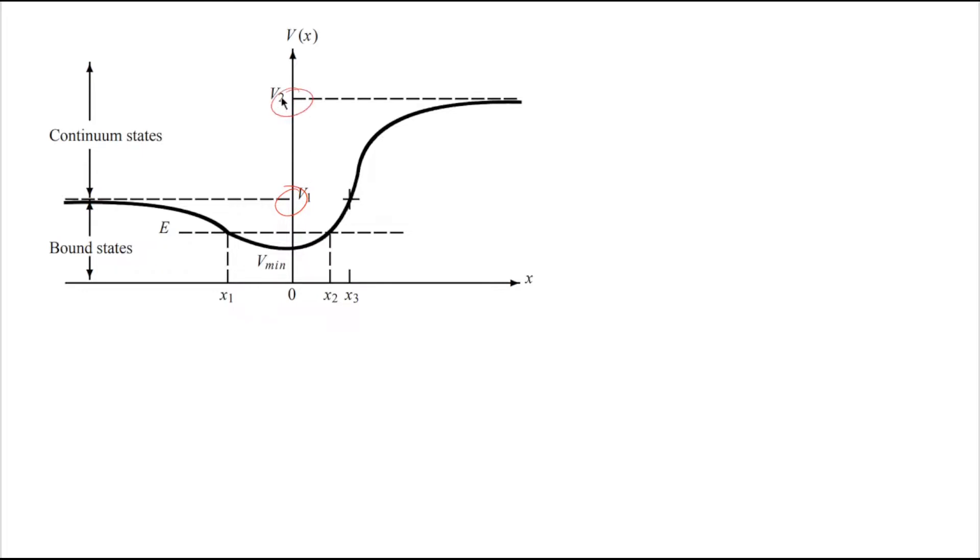Also, we have a minimum potential Vmin which is smaller than V1 and V2. Now let's discuss the condition for bound states where energy spectra are discrete and unbound states where energy spectra are continuous.